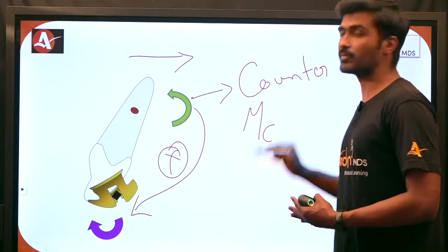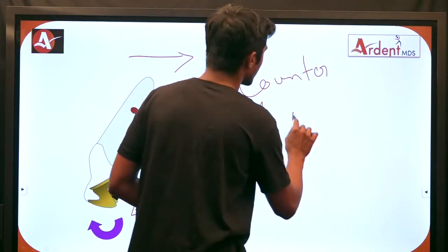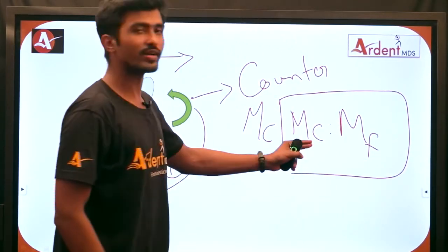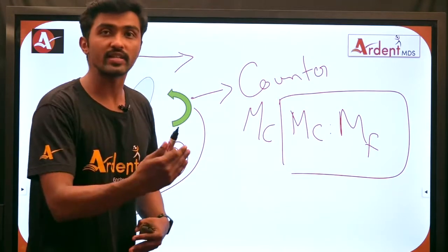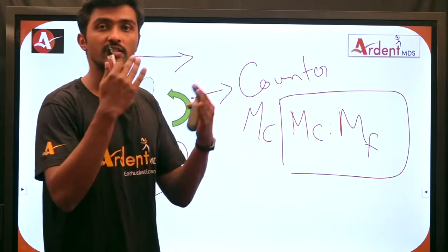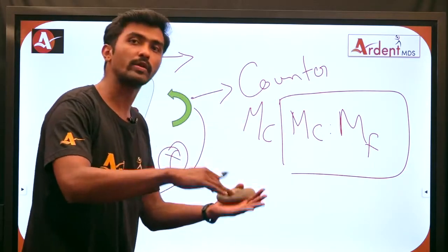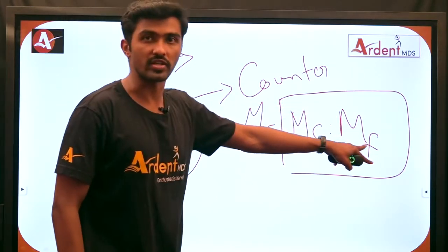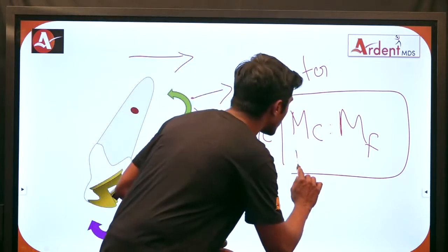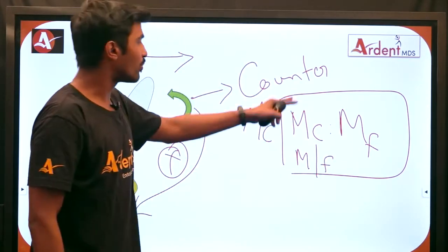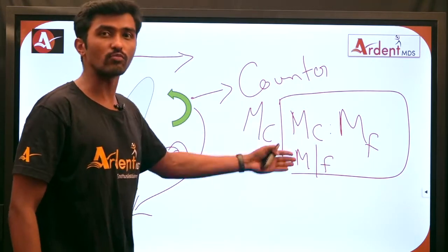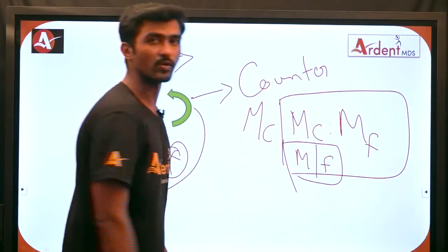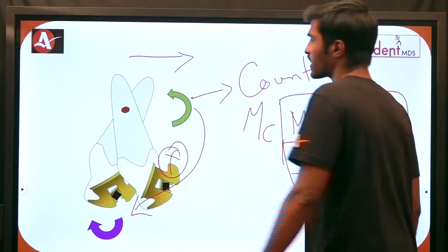It is always the counter moment to moment of the force ratio — Mc to Mf — that determines the different types of tooth movement, such as tipping, translation, and torquing. This ratio is colloquially called the moment to force ratio. Both refer to the same thing: the counter moment to moment of the force ratio.